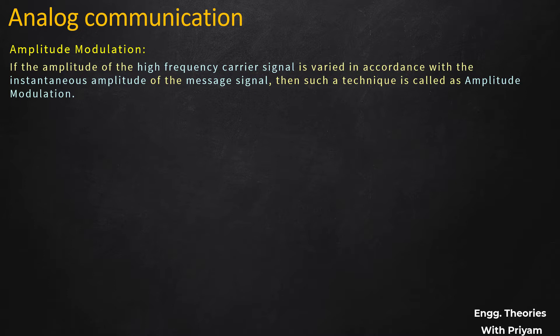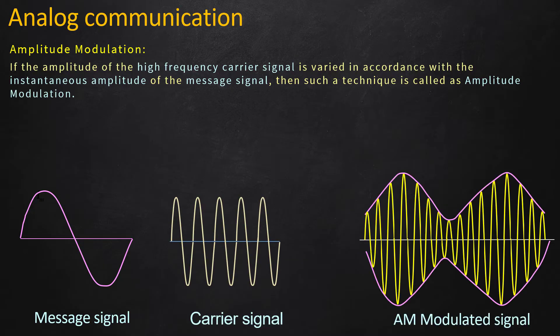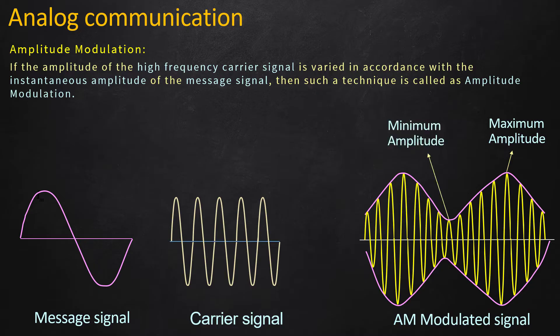Graphically, this is the message signal, this is the high frequency carrier signal, and finally this is the modulated signal. Observing the modulated signal, we can see that the amplitude of the carrier signal is varied in accordance to the message signal. The modulated signal has a maximum amplitude when the message signal is at the positive peak, and a minimum amplitude when the message signal is at the negative peak.